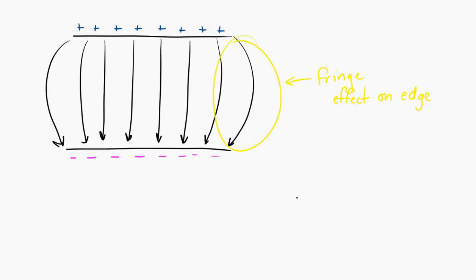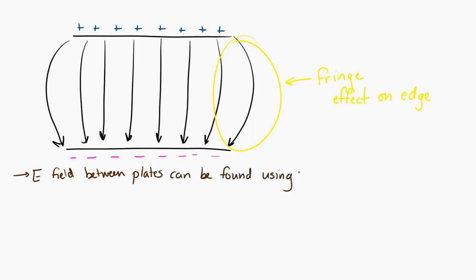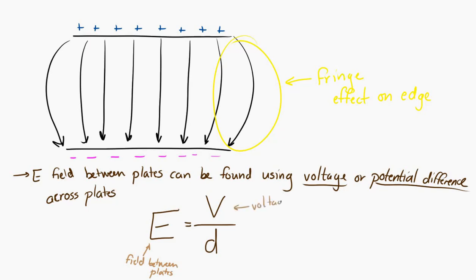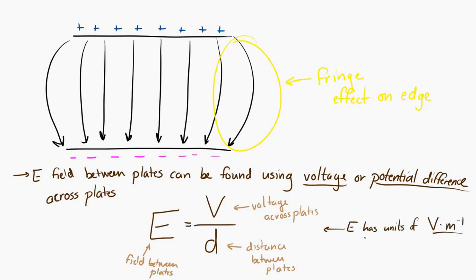We can determine the electric field between the two plates if we know the voltage or potential difference across them. The electric field between the plates equals the voltage divided by the distance between them: E = V/d. This gives us a new unit for electric field — volts per meter. We'll talk more about voltage and potential difference later on.